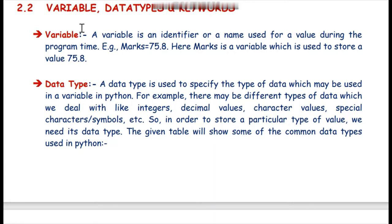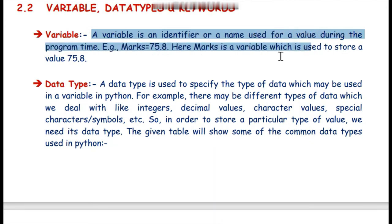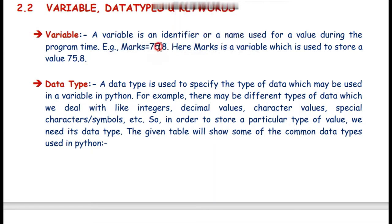So what is a variable and why we have to use it? A variable is an identifier or a simple name used for a value during program time. For example, if we have to accept marks, suppose 75.8, we will declare a variable. A variable is the name of a memory location in which we store temporary values for the program time. We need various values for the program, so we declare variables and give them user-friendly names.